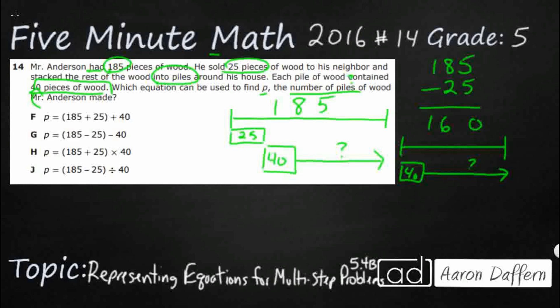You'll notice that H and F are both asking me to add, so we know those are wrong. Then the two other options are: are we subtracting 40, or are we dividing by 40 to find p, the number of piles?